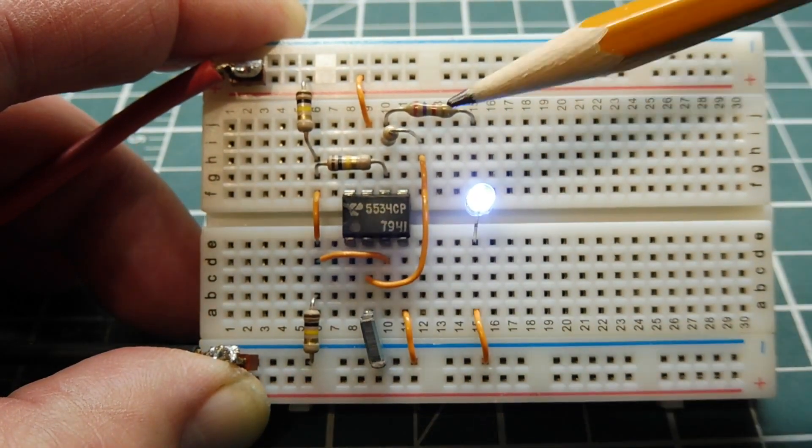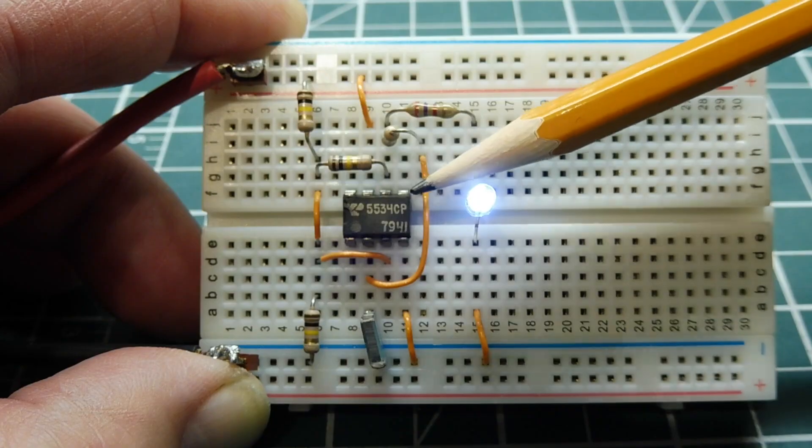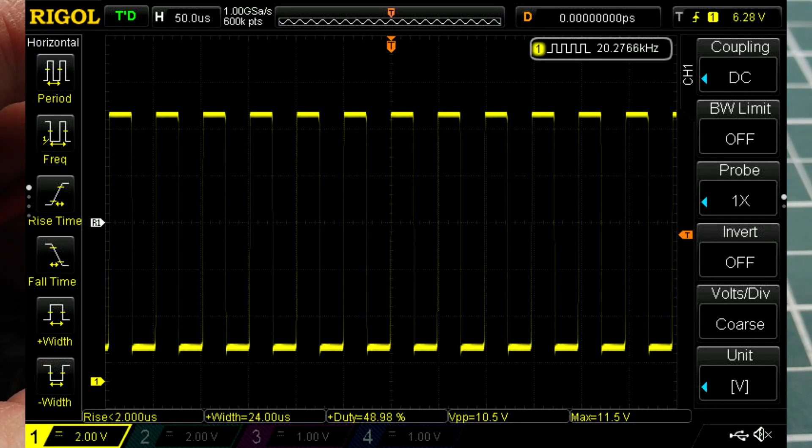Now the output of this oscillator is pin 6 of the op-amp, so we'll connect it up to a scope. So there you can see the output, square wave output, which is running at 20 kHz, and the duty cycle is almost 50%.